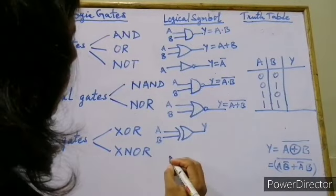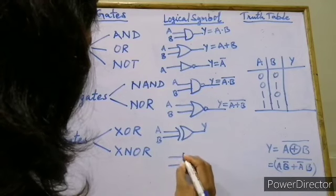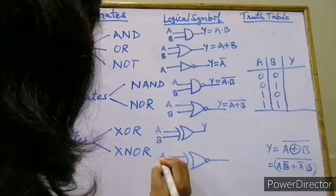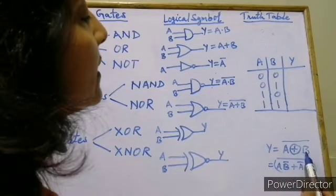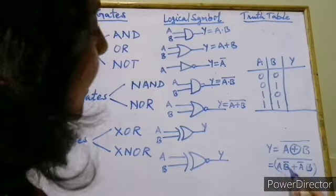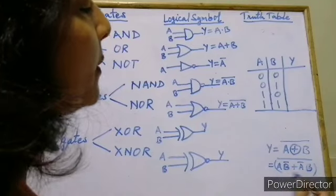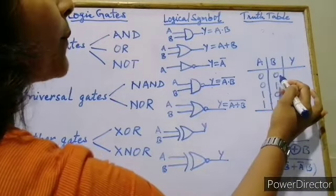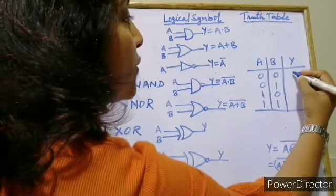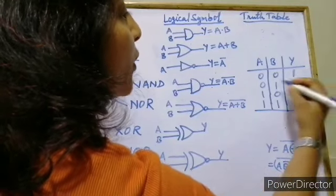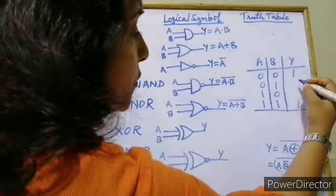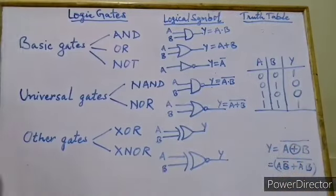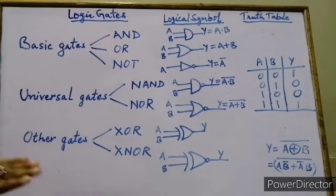XNOR is exclusive NOR. The symbol of XNOR is XOR followed by an inverter or NOT gate. With inputs A and B, Y is the inverse of XOR. The output will be true if both the inputs are the same, and false when both the inputs are different. So in case of 0,0 the output is 1; in case of 1,1 the output is 1; and if both inputs are different the output is 0. So these are all 7 gates: 3 basic gates, 2 universal gates, and 2 other gates.